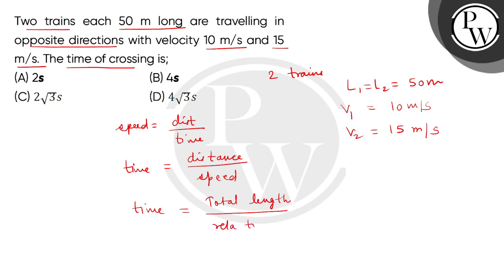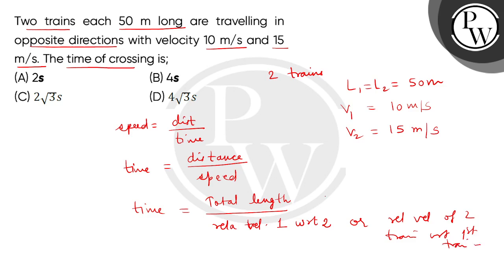In speed, we have to take the relative velocity of the first train with respect to the second train. Because here we have to find just the magnitude, we can take the relative velocity as V2 minus V1. Since they travel in opposite directions, the relative speed is 10 plus 15 equals 25 meter per second.